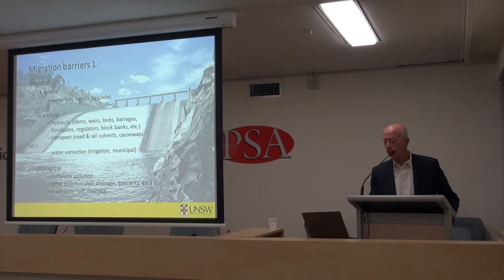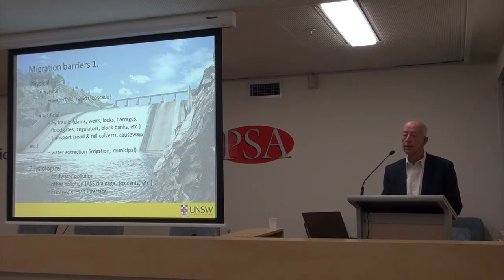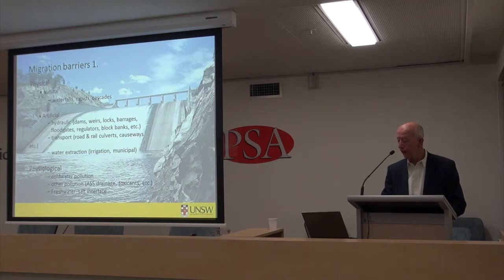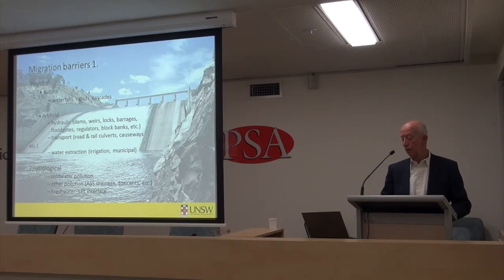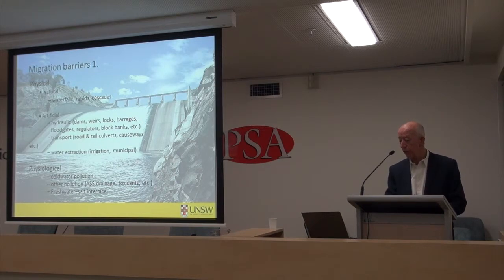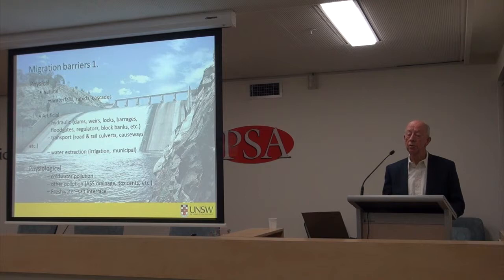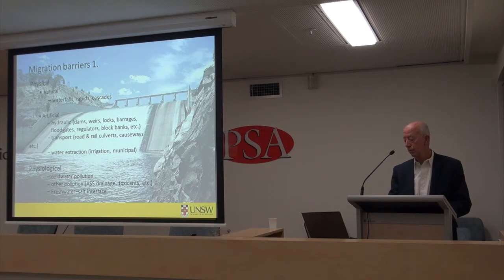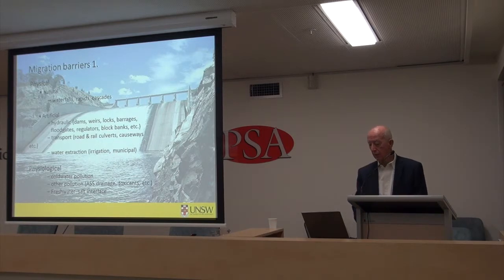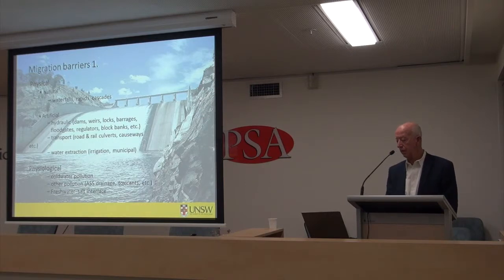Another form of artificial barrier we don't often recognise quite so readily is water extraction. When water extraction schemes are put in place, sometimes they create zones of very high water velocity in streams, at least in localised areas, which can create a barrier for fish that can't cope with high velocities. But more commonly, water extraction leads to reduction in stream depth, particularly over critical natural barriers like riffle zones, and this is being increasingly recognised in the development of environmental flow regimes.